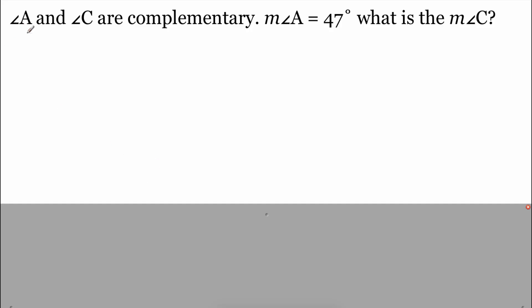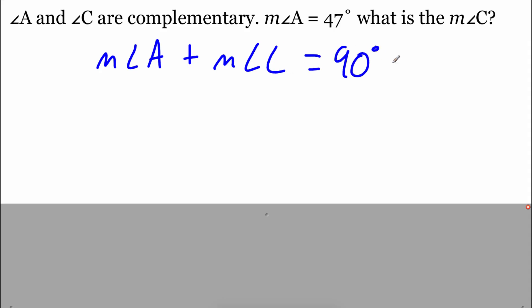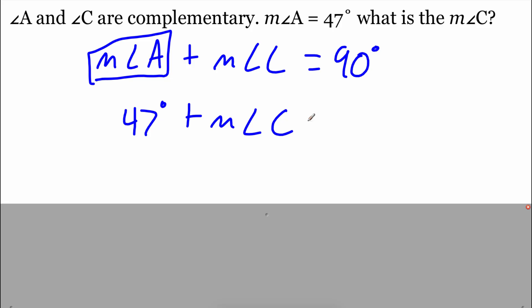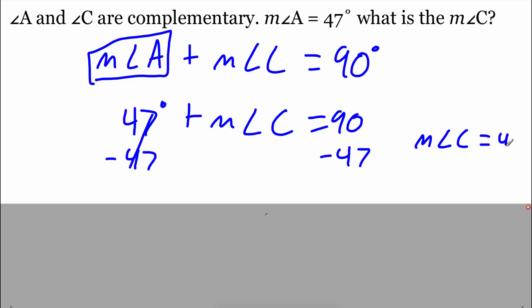In this first example, we're told that angle A and angle C are complementary. Remember, complementary means that when we add them together it equals 90 degrees. So we write: the measure of angle A plus the measure of angle C equals 90 degrees. We know the measure of angle A is 47 degrees, so we replace that with 47. So 47 plus the measure of angle C equals 90 degrees. Subtracting 47 from both sides gives us the measure of angle C equals 43 degrees.